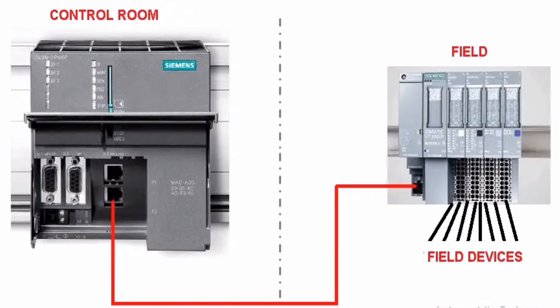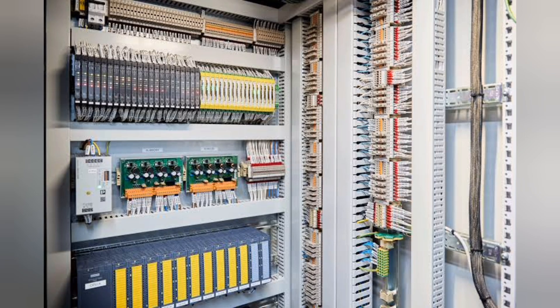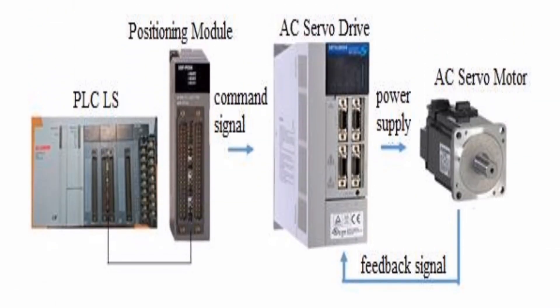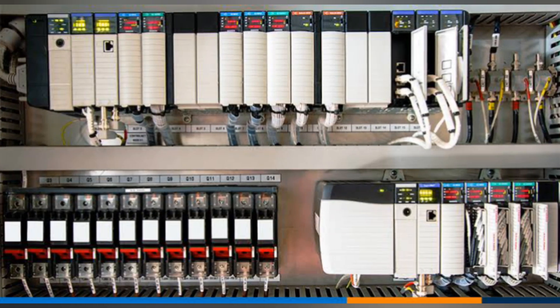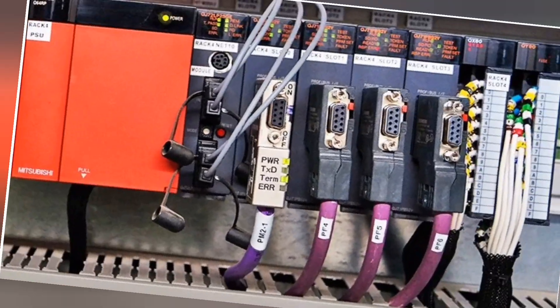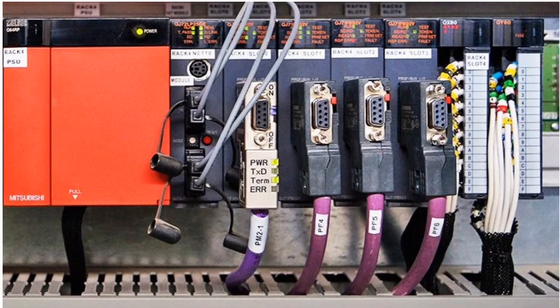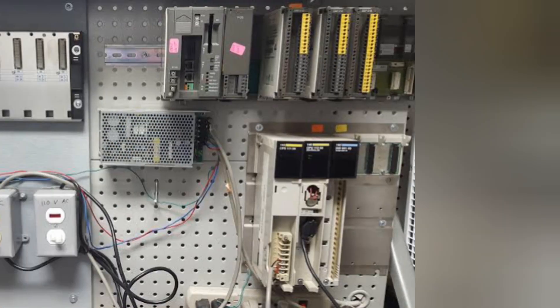The input section converts the field signals to logic-level signals that the PLC's processor can read directly. The processor section reads these inputs and processes the signals, executing the program and preparing the output signals.